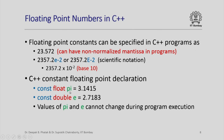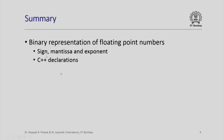In summary, what we studied in this lecture is the binary representation of floating point numbers. The components of the representation are: a sign bit, a certain number of bits for the mantissa stored in normalized form, and a certain number of bits for the exponent which can be a positive or negative integer. We have also seen how to declare floating point variables in C++. Thank you.